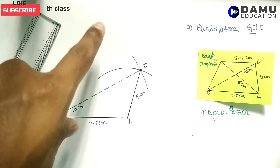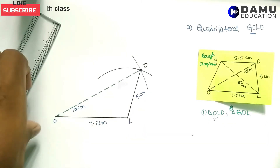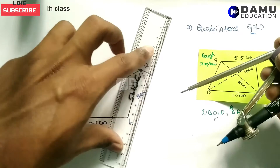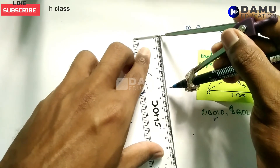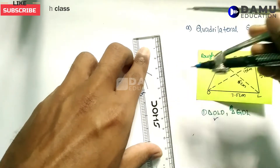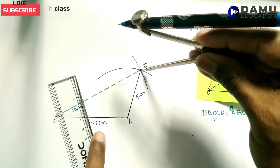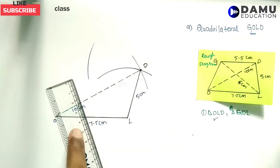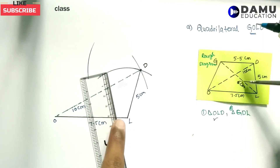Next, construction of point G. D is already located. We need to take GD = 5.5 cm, so mark 5.5 cm on the ruler and with D as center draw one arc of radius 5.5 cm.